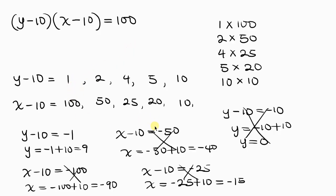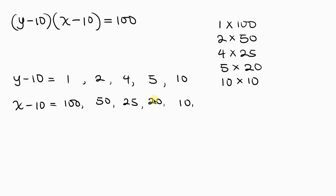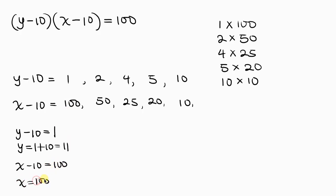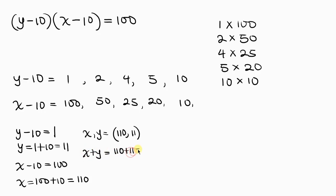Solving only the positive factor pairs: for the first pair, y minus 10 = 1 gives y = 11, and x minus 10 = 100 gives x = 110. So x plus y = 110 plus 11 = 121. This is one solution.